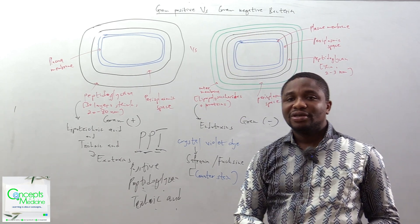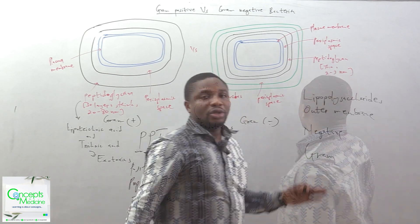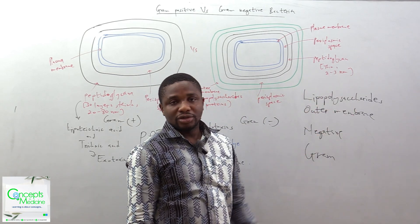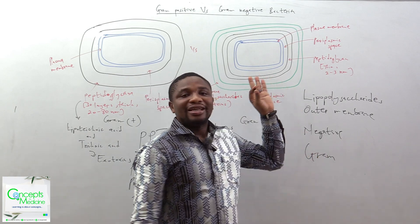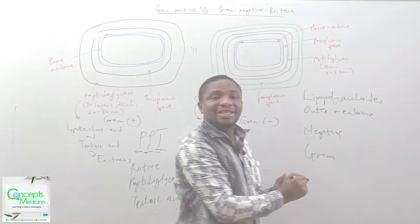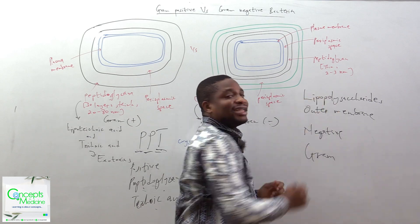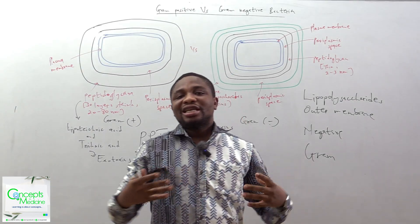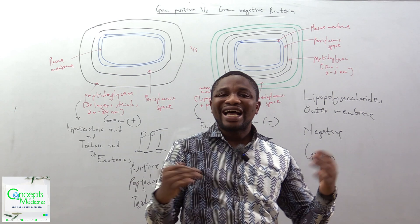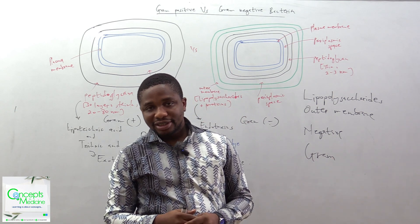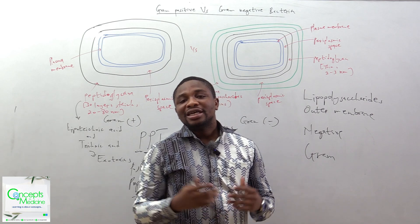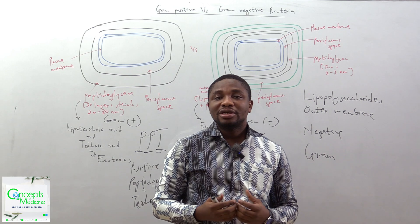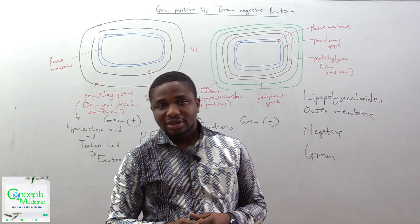For the gram-negative, use the word LUNG: Lipopolysaccharides, Outer membrane, Negative, Gram. So if you remember LUNG, it tells you that the gram-negative bacteria has an outer membrane containing lipopolysaccharides. The gram-negative bacteria releases lipopolysaccharides on its own or when attacked by antibiotics, and these lipopolysaccharides are what we call endotoxins — meaning the gram-negative bacteria produces endotoxins.